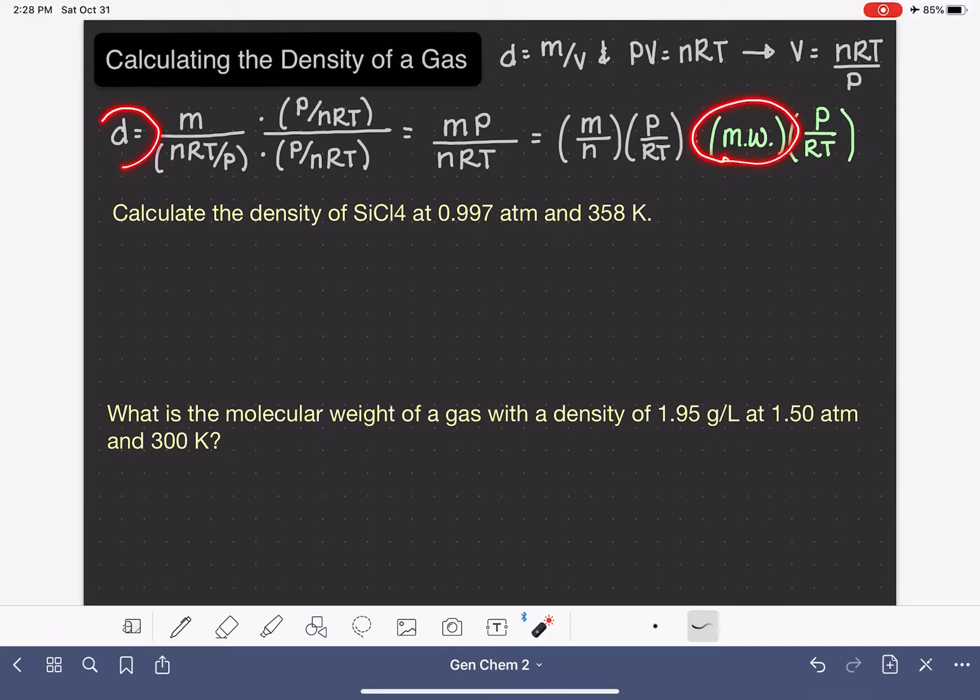So the density of a gas can be calculated by taking the molecular weight of the gas molecule, multiplying it by the pressure, dividing by our ideal gas constant R, and the temperature as well.